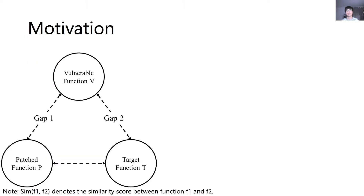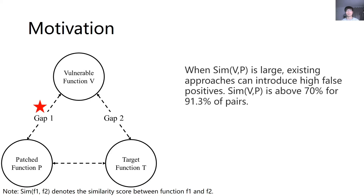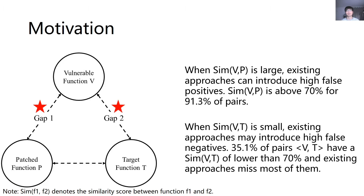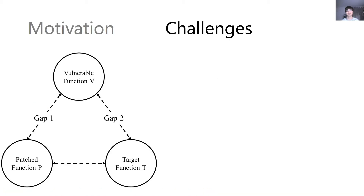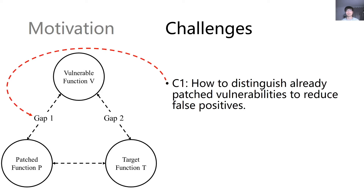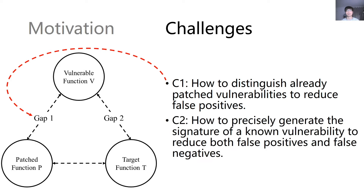We investigate the similarity among vulnerable functions and target functions to illustrate the problem of existing approaches. When CMVP is large, existing approaches can introduce high false positives. On the other hand, when CMVP is small, existing approaches may introduce high false negatives. In summary, there are two main challenges in detecting recurring vulnerabilities with both low false positives and low false negatives. The first challenge is how to distinguish already patched vulnerabilities to reduce false positives. The second challenge is how to precisely generate the signature of a known vulnerability to reduce both false positives and false negatives.